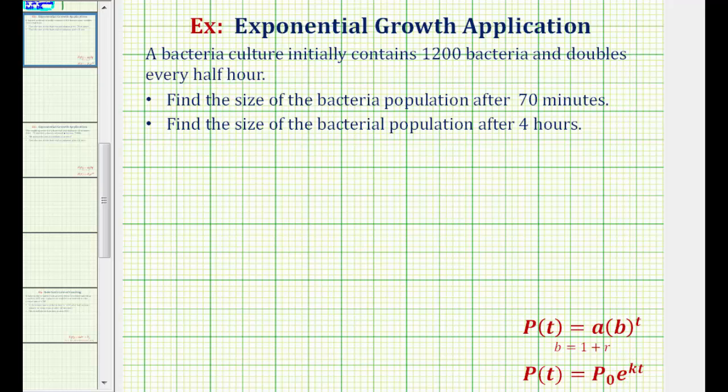To model the population, we'll use an exponential function in this form here. P of t equals a times b raised to the power of t, where a is the initial or starting amount, and the base b is equal to 1 plus r, where r is the growth rate per unit of time and t is time.